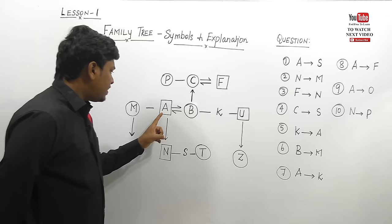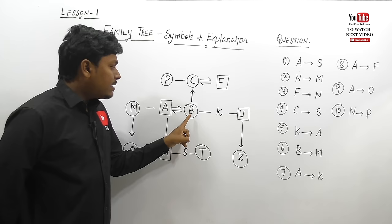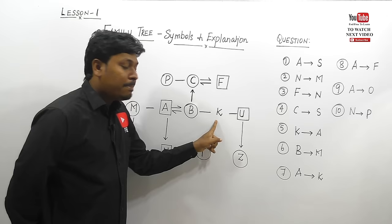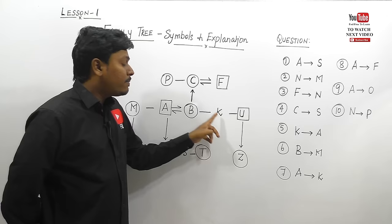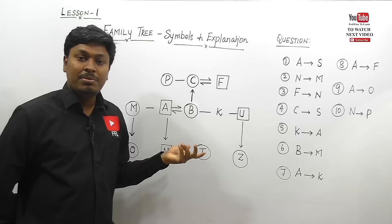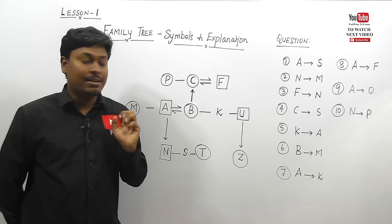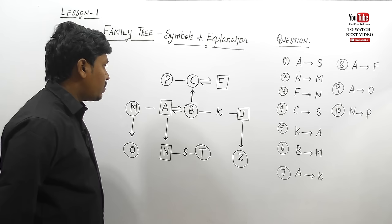Question 7: A to K — from A, what is the relation of K? B is A's wife. We don't know the gender of K. If K is a male person, then A should call K brother-in-law because wife's brother is brother-in-law. If K is female, it is sister-in-law. So the answer is either brother-in-law or sister-in-law.